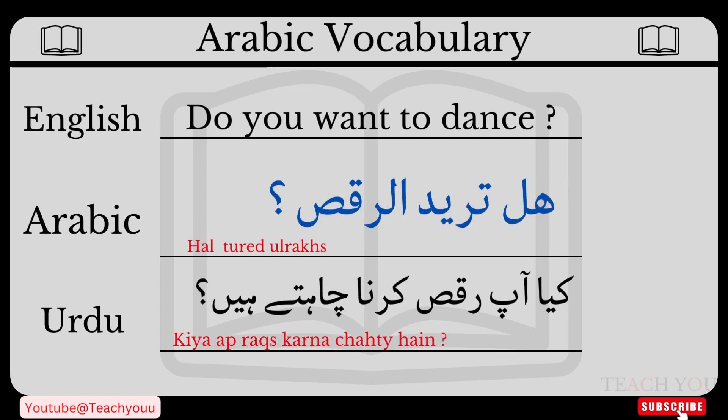Do you want to dance? In Urdu: Kya aap raqs karna chahte hain? In Arabic, how can we say it? Hal turiду an tarqus. In Arabic we say: Hal turidu an tarqus. Let's repeat: Do you want to dance? — Kya aap raqs karna chahte hain? — Hal turidu an tarqus.